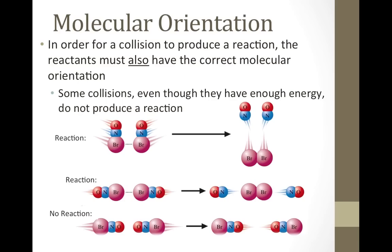In our BrNO decomposition example, use these three models to help you see what I mean. The top reaction shows the molecules colliding side by side so that the products can form. We have a successful collision there. The middle reaction shows the molecules colliding Br-N to Br-N so that products can also form. That's another way to produce a successful collision.